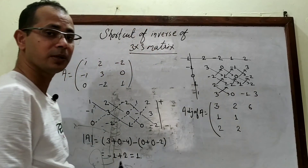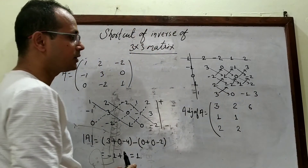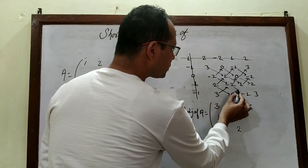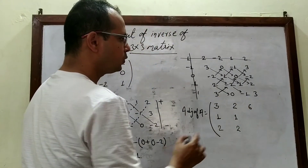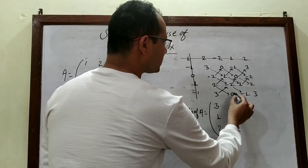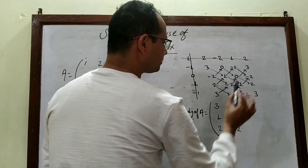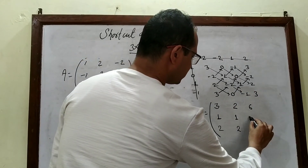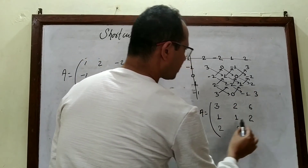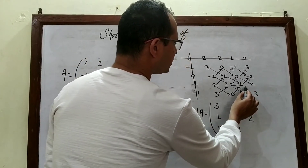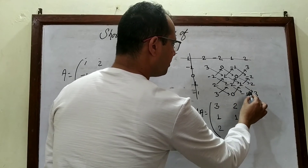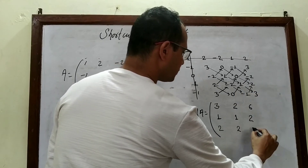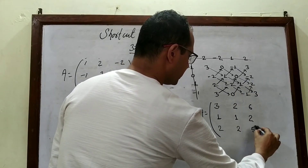Then -2×(-1) - 2×0 = 2. And 1×3 - (-1)×2 = 3 + 2 = 5. So the adjoint matrix entries are now determined.